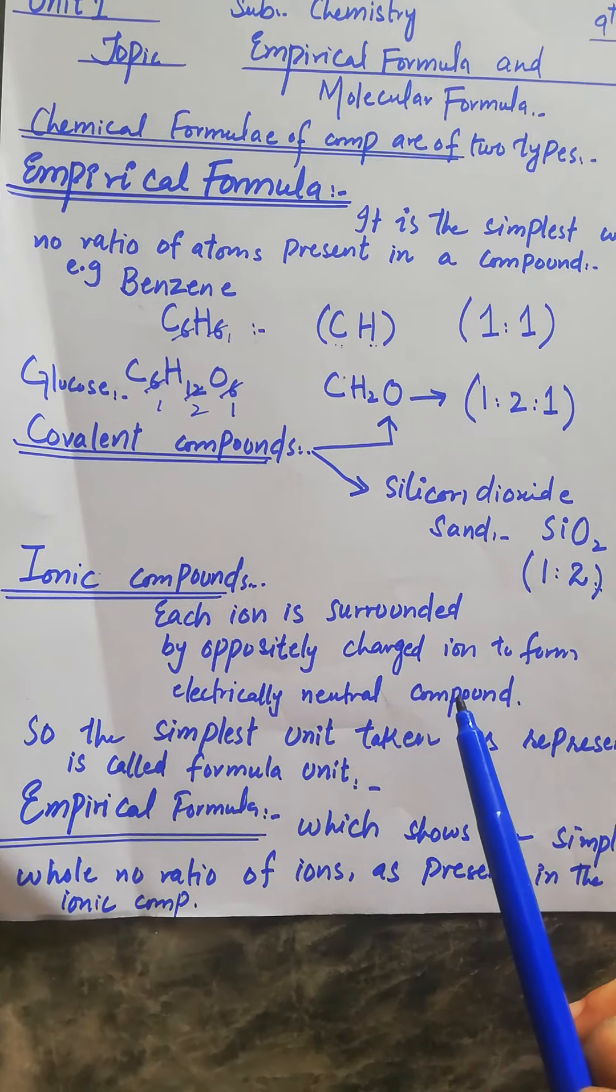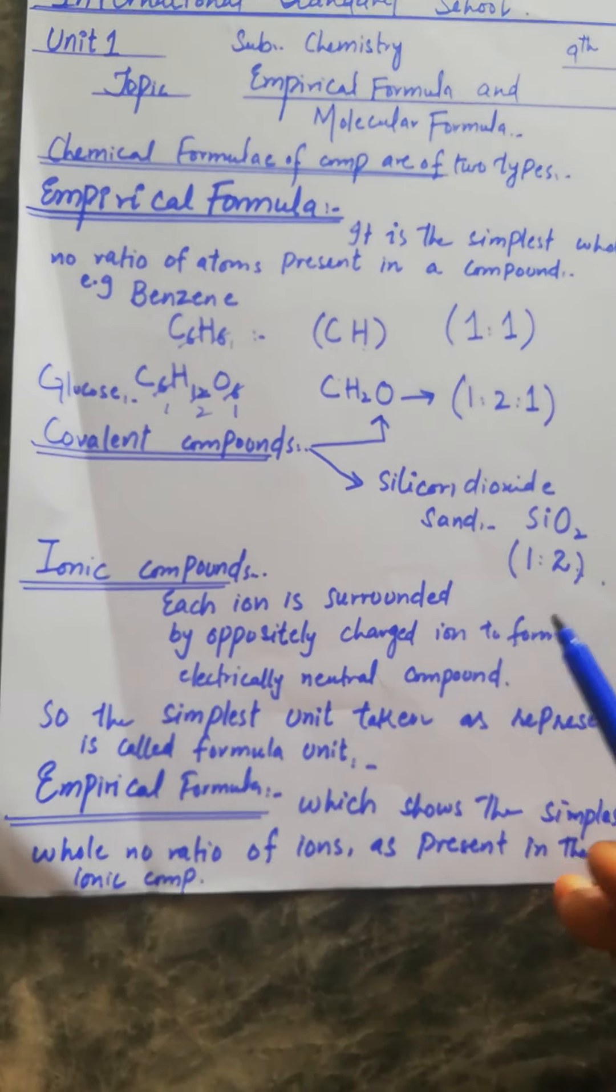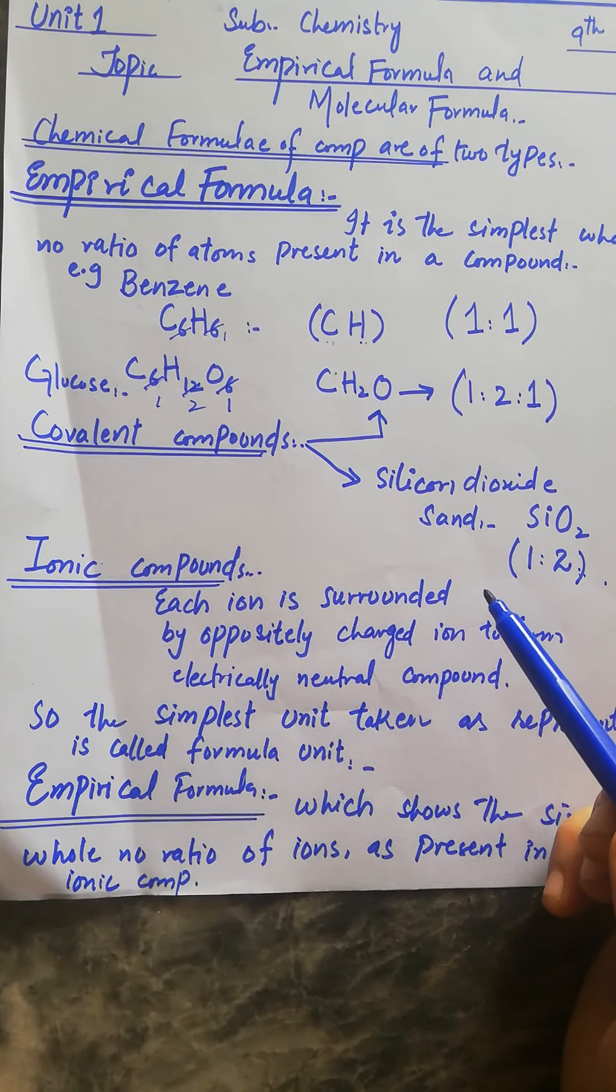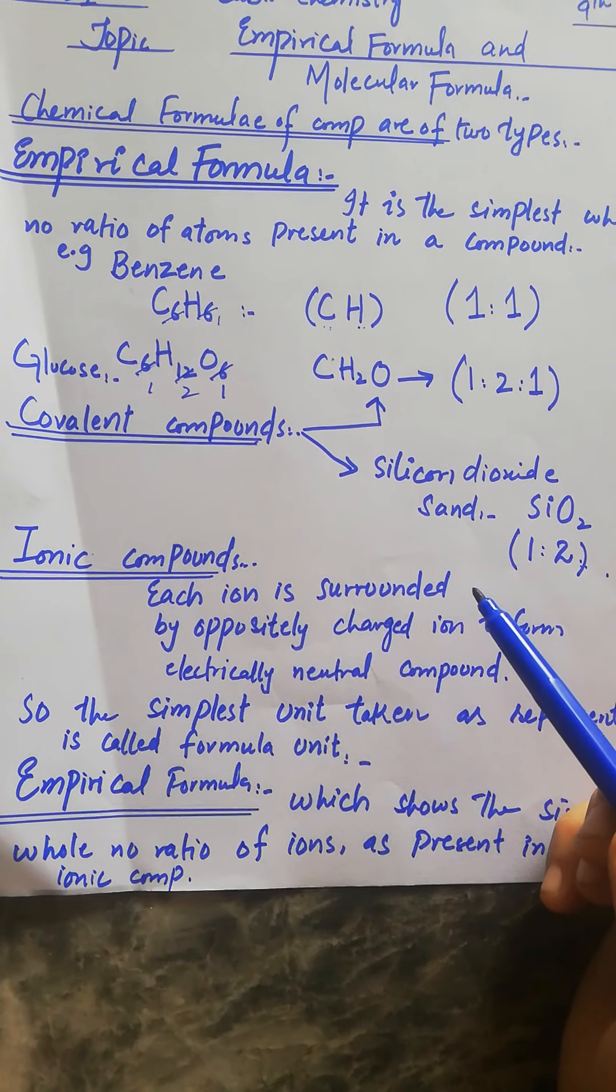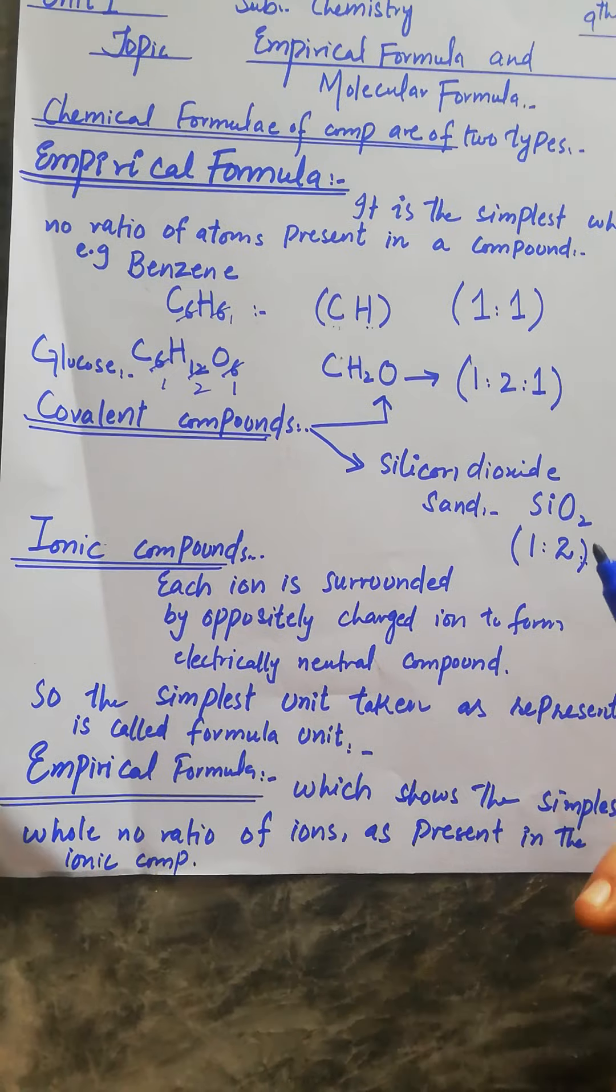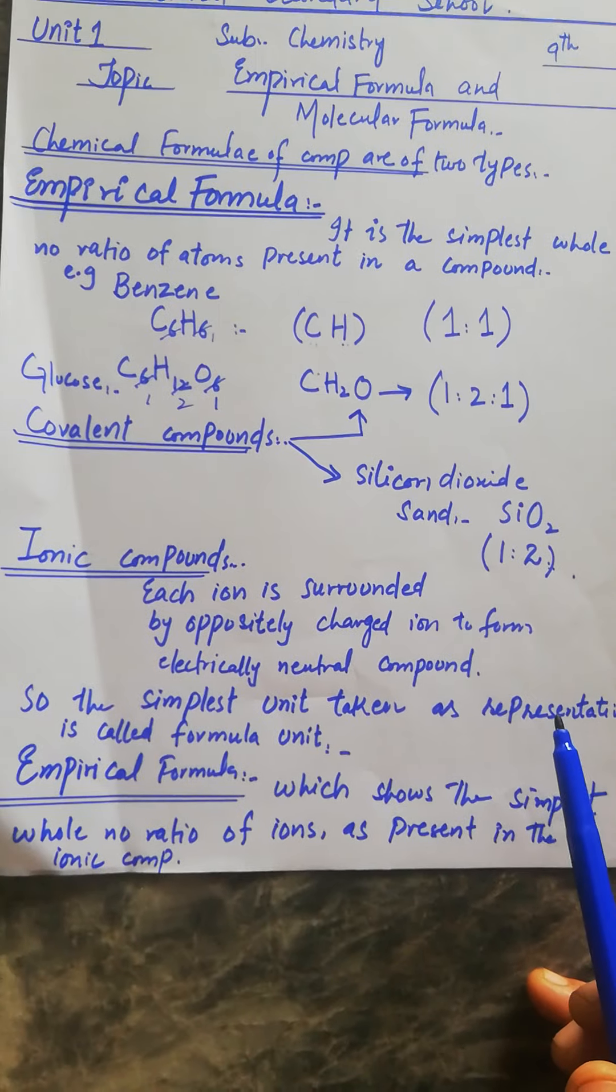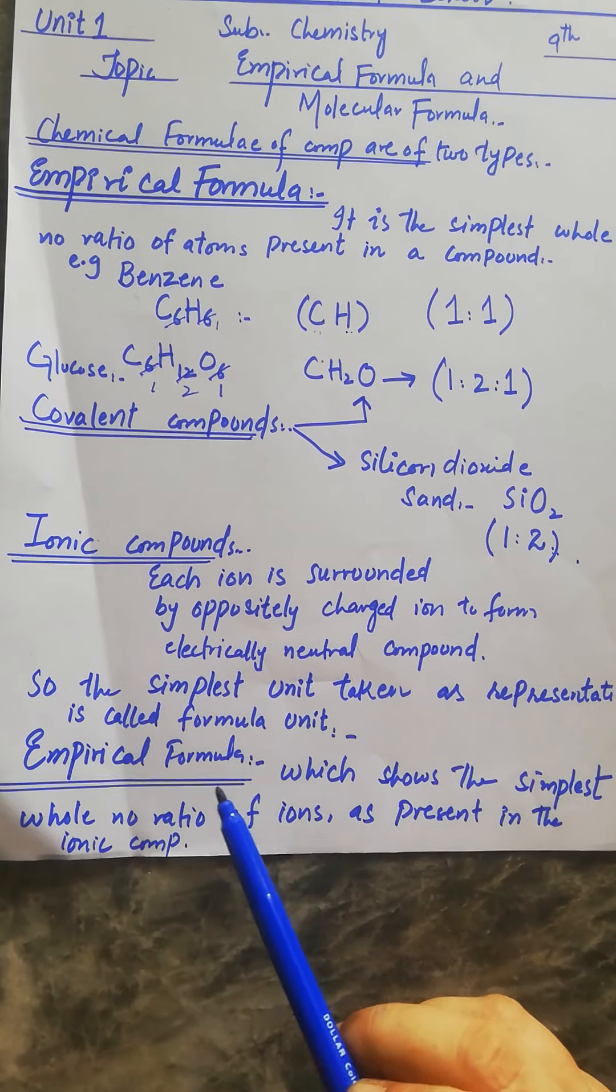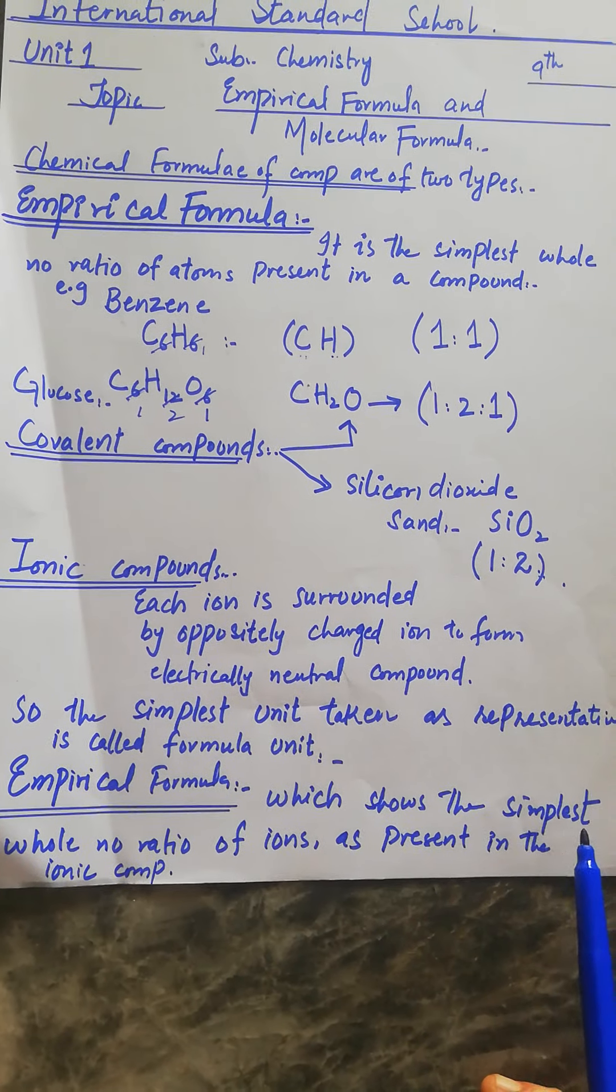For example, we take sodium chloride. The simplest whole number ratio of ions present in an ionic compound is called the empirical formula of that ionic compound.